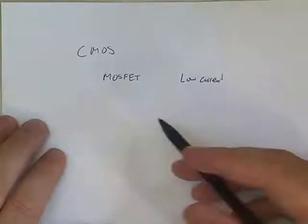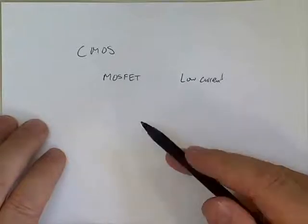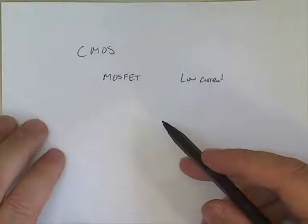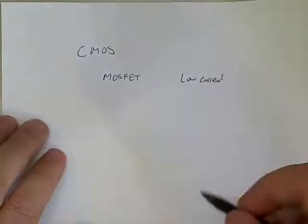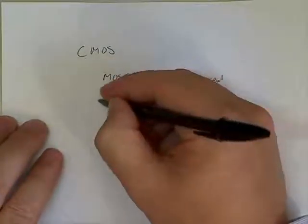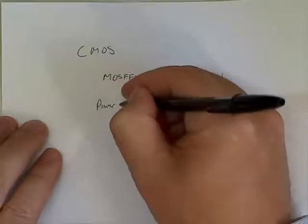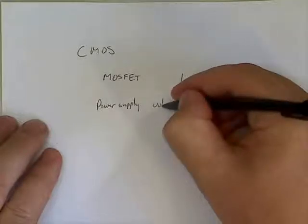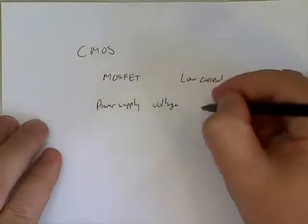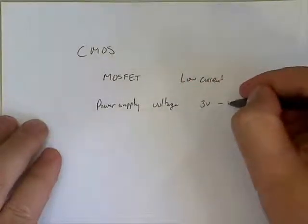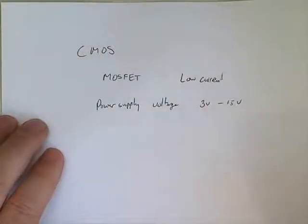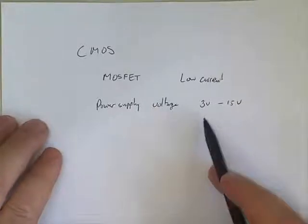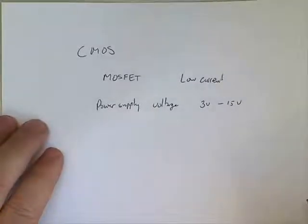One of the main benefits of CMOS is that the voltage range for the power supply is flexible. The power supply voltage can be between 3 volts and 15 volts, which is quite a large range. There are even newer technologies where they can work at 1.5 volts.